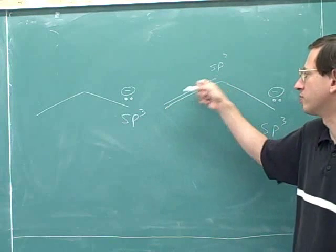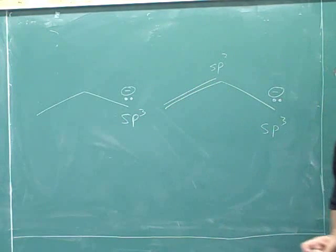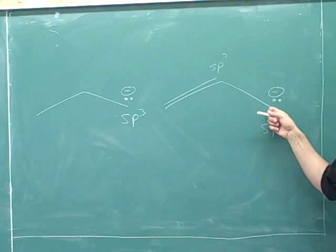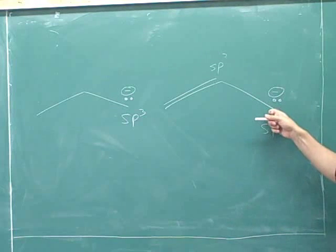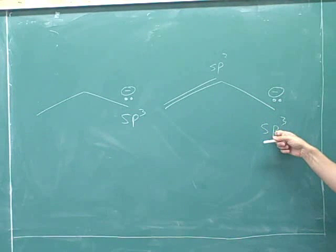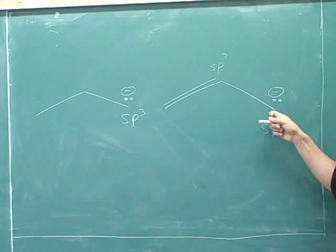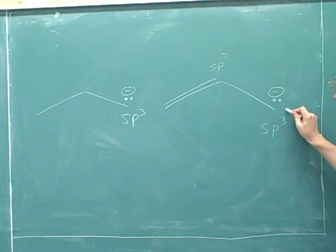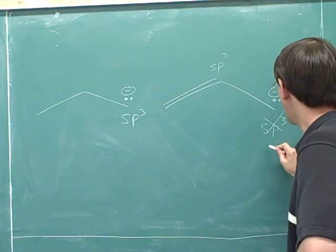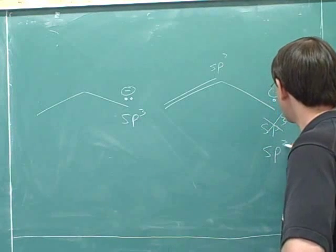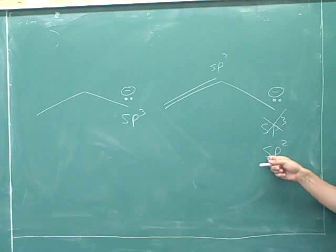We would still have the overlap of the p orbitals in this pi bond. But in order to be conjugated, we need to have a p orbital here as well. So again, if this carbon were sp3 hybridized, it would not have any p orbitals. So this would not be conjugated. That's the reason why it prefers to break the normal rule and be sp2 hybridized.